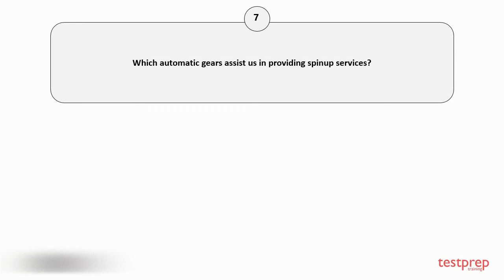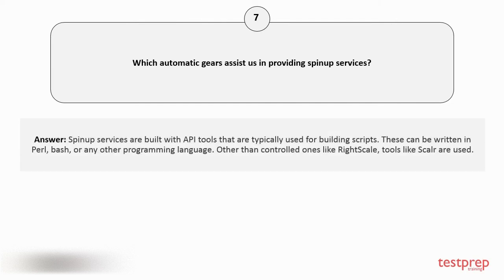Question number 7: Which automatic tools assist us in providing spin-up services? Spin-up services are built with API tools that are typically used for building scripts. These can be written in Perl, Bash, or any other programming language. Other than controlled ones like RightScale, tools like Scalar are used.